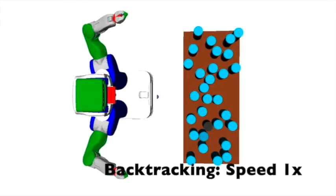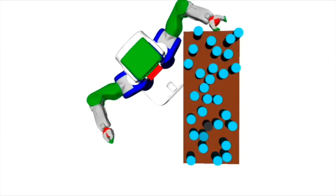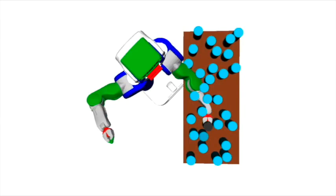Now we show a difficult example of the can world for both backtracking and our system. Backtracking, in this case, tries to find an error-free solution to picking up the black can. However, it's not able to do so.